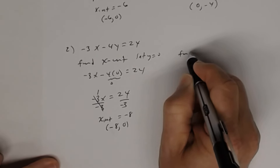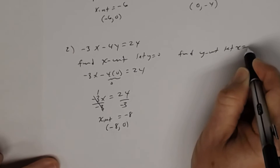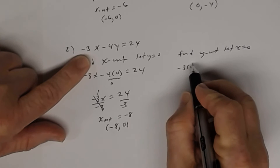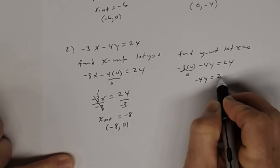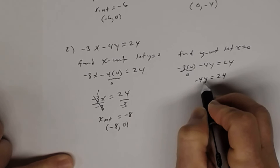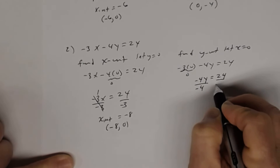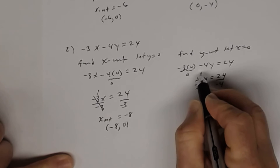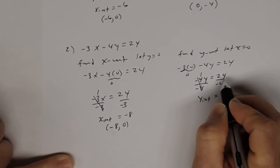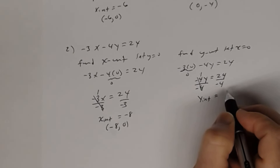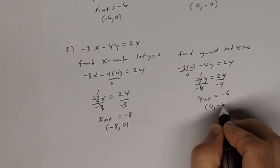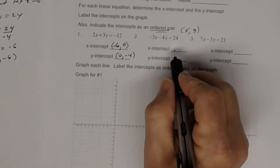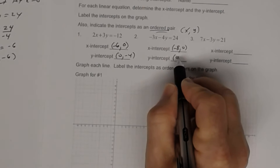To find the y-intercept, remember, you're going to let x equal 0. In place of x I substitute 0: negative 3 times 0 minus 4y equal 24. 3 times 0 is 0, so I get negative 4y equal 24. The coefficient of y is negative 4, so I divide both sides by negative 4. Negative 4 divided by negative 4 is 1, and 24 divided by negative 4 is negative 6. As an ordered pair, x is 0 and y is negative 6, so it's 0, negative 6.